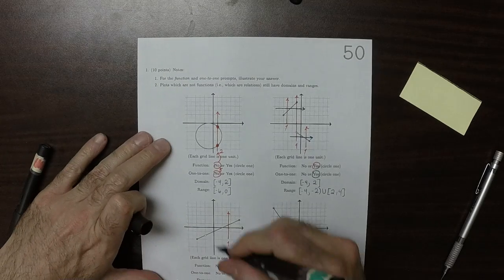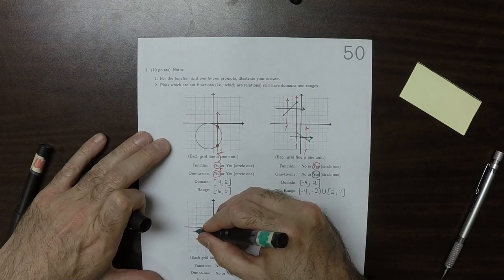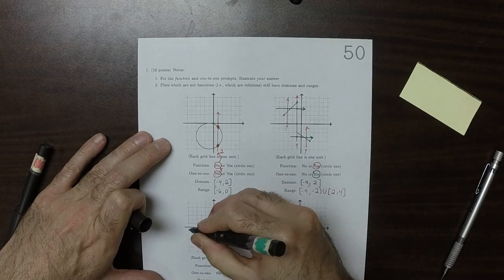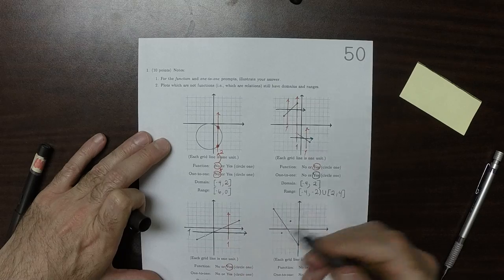Is it a one-to-one function? Yes. Because again, that's just going to be one intersection or zero.